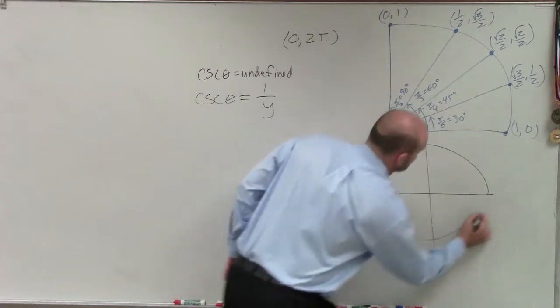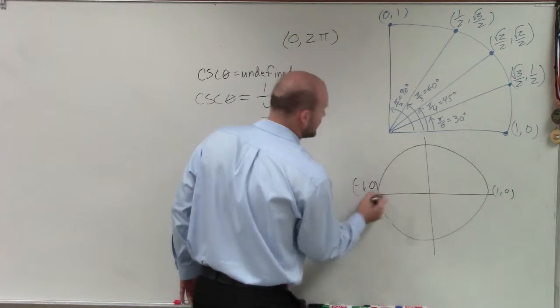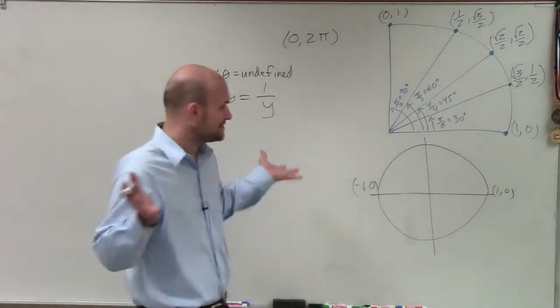Well, on this right quadrant here, I have (1, 0). And over here, I have (-1, 0). For these two points, (0, 1) and (0, -1), the x value is 0. So that's not what we're looking for.